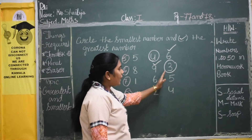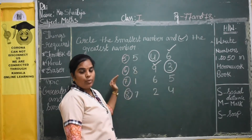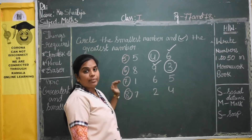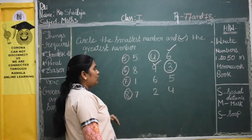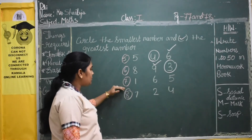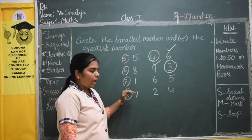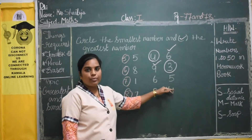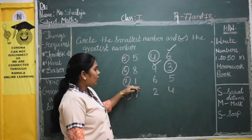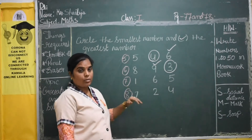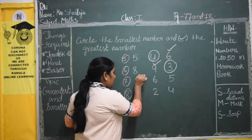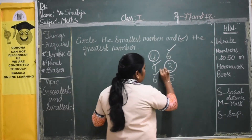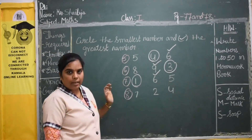In number line, 3 comes near to 0 and 9 is far from 0. So coming to the 7th one, here we have 1, 6, 5. So here, 1 is the smallest number and 6 is the greatest number.